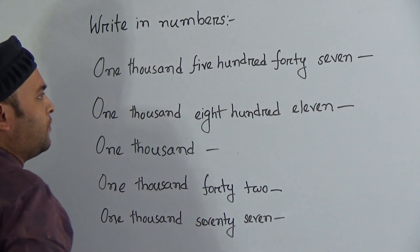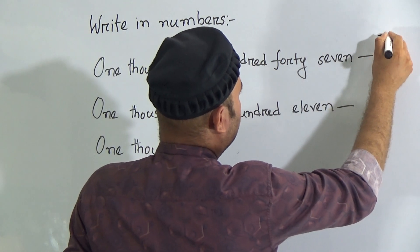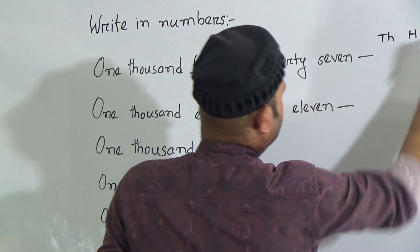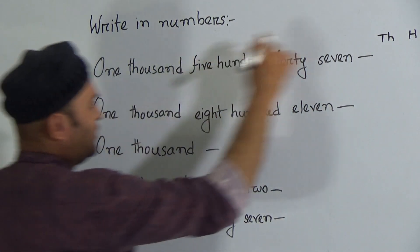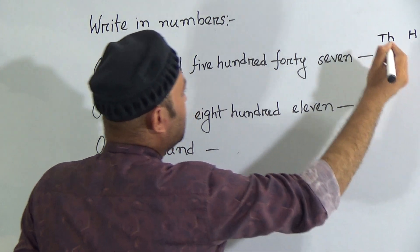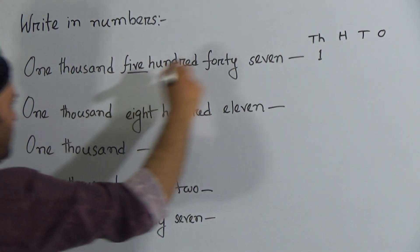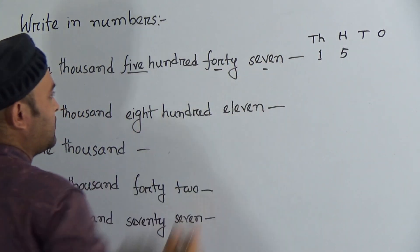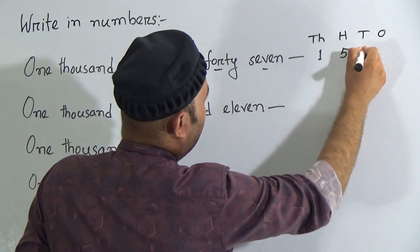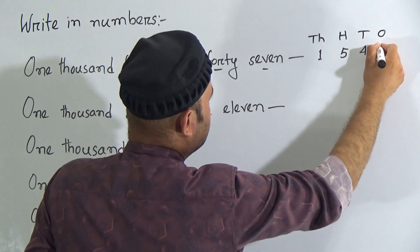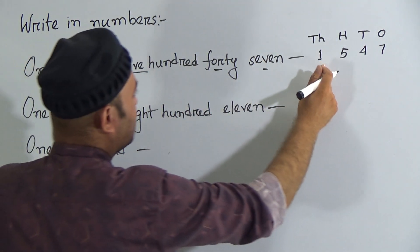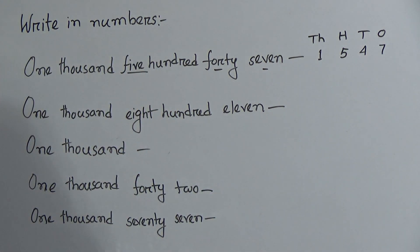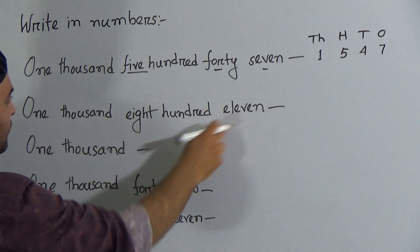First one: 1547. We write the columns as thousands, hundreds, tens, and ones. Here is one thousand — write one in the thousands place. Five hundred — write five in the hundreds place. Forty-seven — write four in the tens place and seven in the ones place. So it is one thousand five hundred forty-seven.